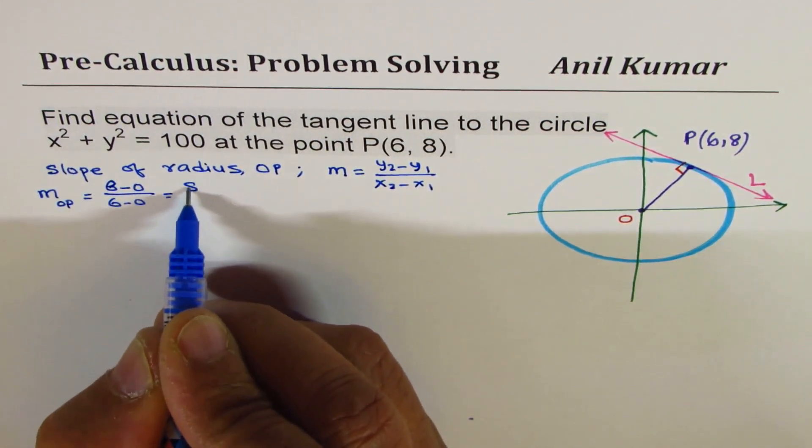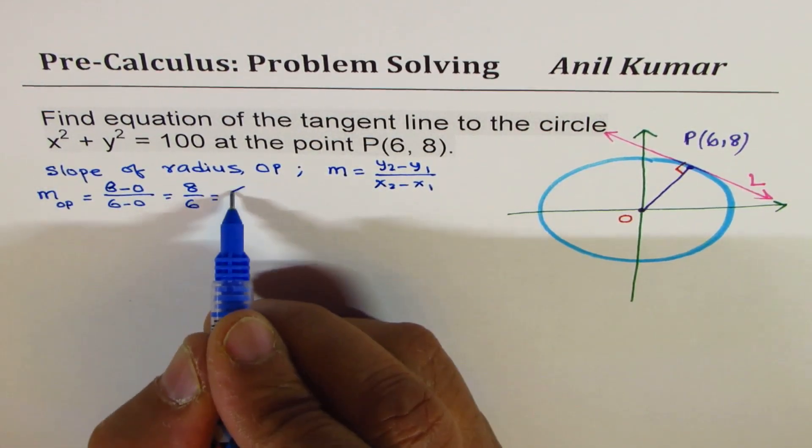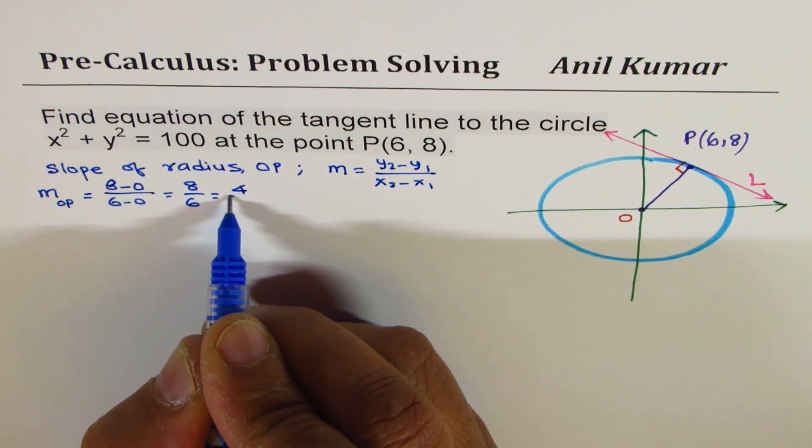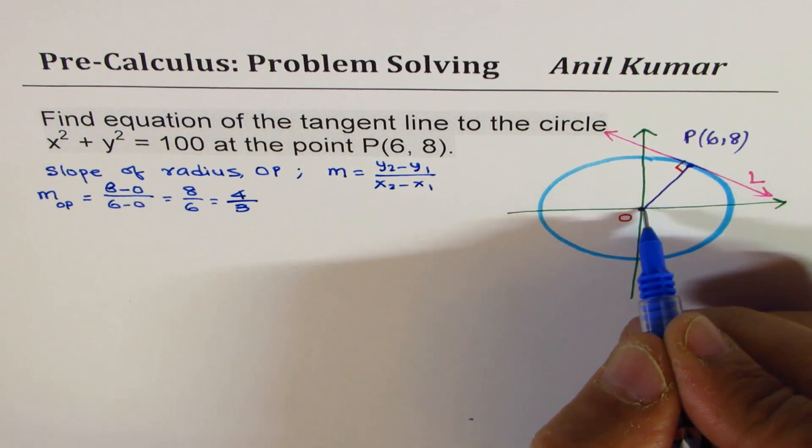8 minus 0 over 6 minus 0. So it is 8 over 6, which could be written as dividing by 2, 4 over 3.